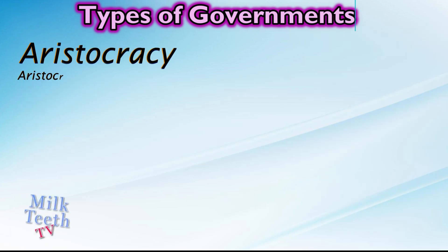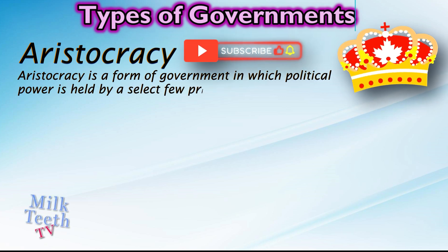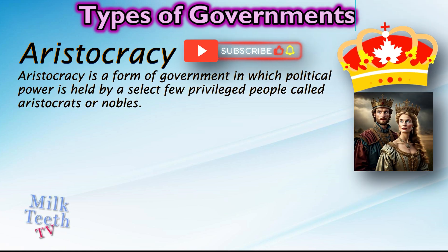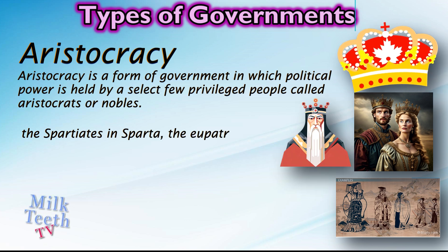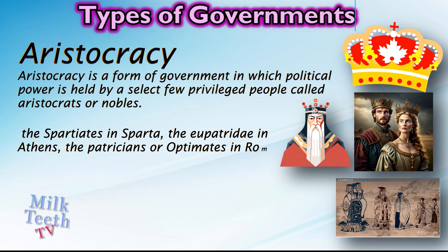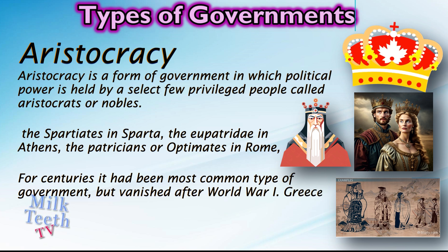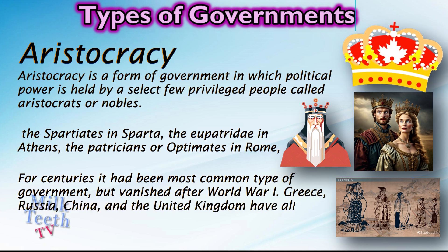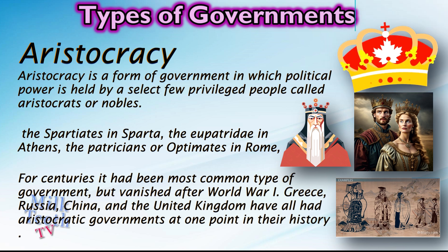Aristocracy: Aristocracy is a form of government in which political power is held by a select few privileged people called aristocrats or nobles. In ancient times, aristocracy could be seen in the Spartiates in Sparta, the Eupatridae in Athens, and the Patricians or Optimates in Rome. For centuries it had been the most common type of government, but it vanished after World War I. Greece, Russia, China, and the United Kingdom have all had aristocratic governments at some point in their histories.